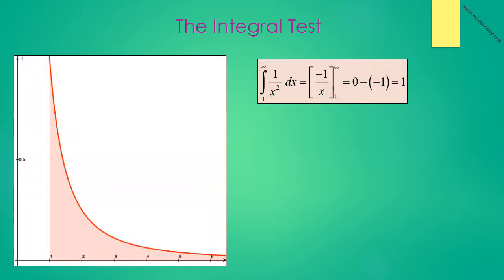Now let's look at the integral from 1 to infinity of 1 over x squared dx. We see the area under the curve, and by the fundamental theorem of calculus this equals negative 1 over x evaluated from 1 to infinity, which is 0 minus negative 1, which is 1. So this integral converges.